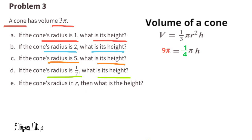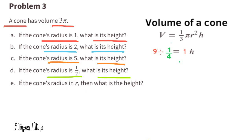So the equation reads 9 pi equals 1/4 pi times h. We multiply both sides by the reciprocal of 1/4, which is 4. 9 pi divided by 1/4 pi is the same as 9 divided by 1/4, since pi divided by pi cancels out. 9 times 4 equals 36. So when the radius is 1/2, the height of the cone is 36 units.